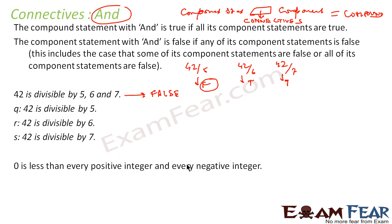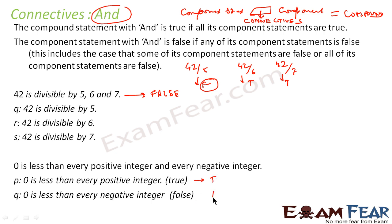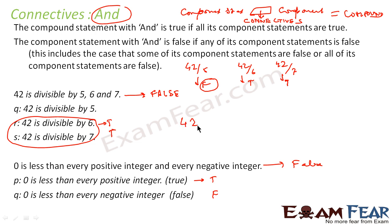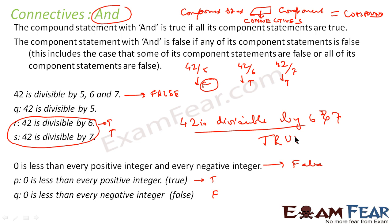Let's take one more example: 0 is less than every positive integer and every negative integer. So it has two statements. First, 0 is less than every positive integer, which is true; and 0 is less than every negative integer, which is false. That means the whole statement is false. Here, if we have two statements that are both true, and we create a compound statement using those two statements, the compound statement will be true. For example, 42 is divisible by 6 and 7 — this statement is true, because both component statements are true.